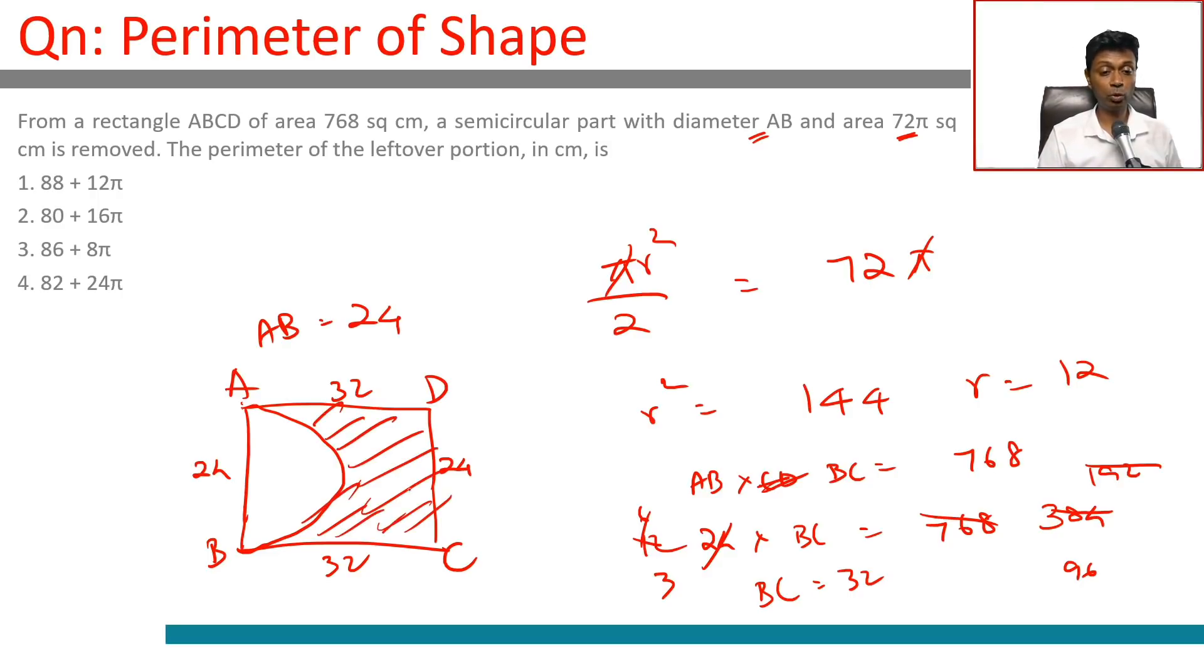The perimeter will be AD + DC + BC plus half the circle's perimeter. That's 32 + 24 + 32 = 88, plus πr where r = 12. So the answer is 88 + 12π.